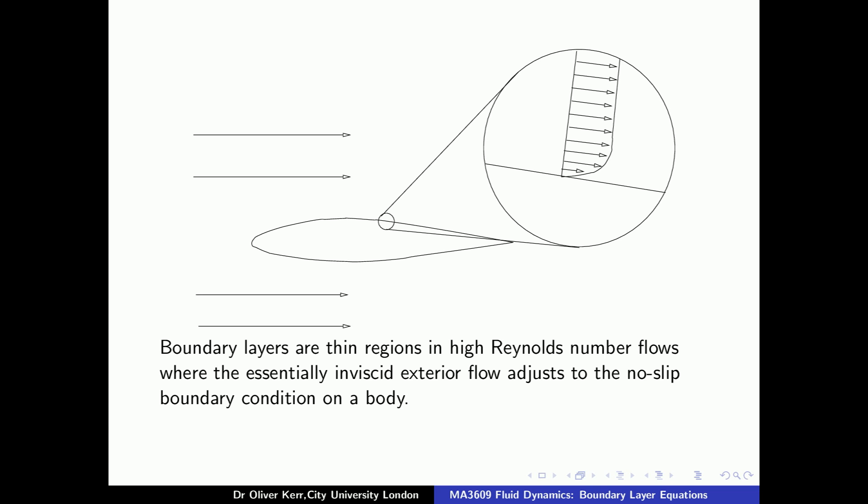When we have a fast flow, a high Reynolds number flow, the bulk of the flow is essentially inviscid. Viscosity has little direct impact on much of the flow. However, if we look very closely at the flow near a boundary, we see there is a thin layer, the boundary layer, where the essentially inviscid flow adjusts to the no-slip boundary condition of a viscous fluid.